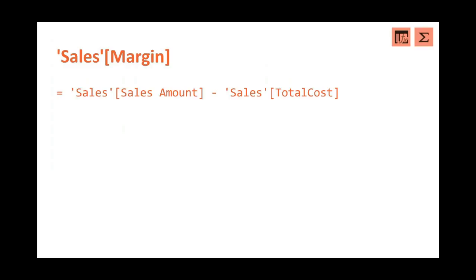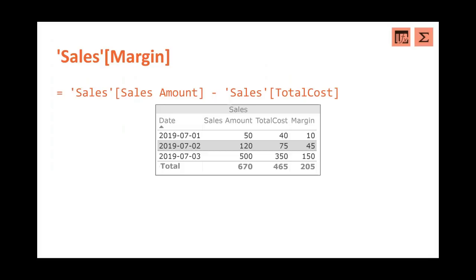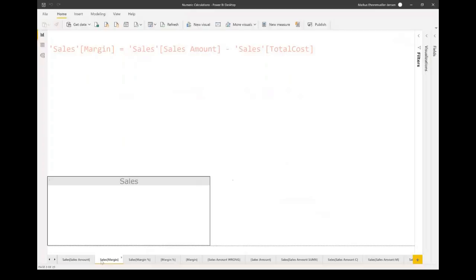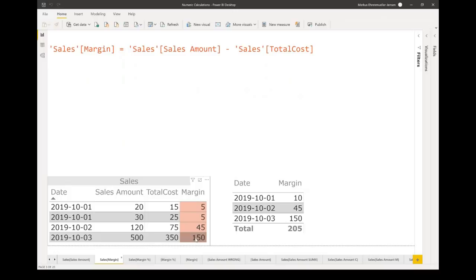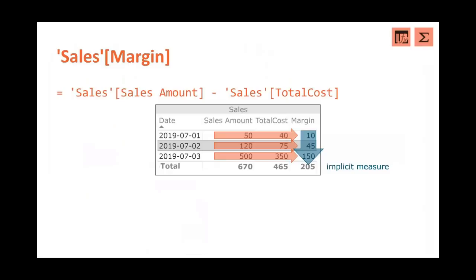DAX is really easy to read. The next calculated column is sales margin. We subtract total cost from sales amount. In our example: sales amount 50 minus total cost 40 gives margin 10; 120 minus 75 gives 45; 500 minus 350 gives 150. For the total of 205, the implicit measure with default summarization 'sum' calculates 10 + 45 + 150 = 205. We can see this in the demo as well — 20 minus 15 is 5, and so on, with 205 as the total.